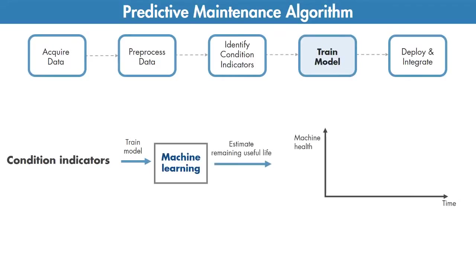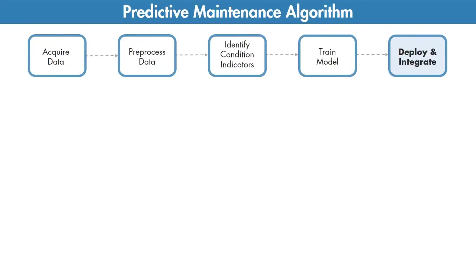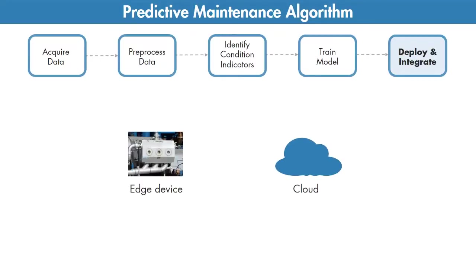Or you can also predict the trend the pump will follow to transition between these two states. Finding a model that captures the relationship between the extracted features and the degradation path of the pump will help you estimate how much time there is until failure and when you should schedule maintenance. After developing your algorithm, you can get it up and running by deploying it on the cloud or on your edge device.